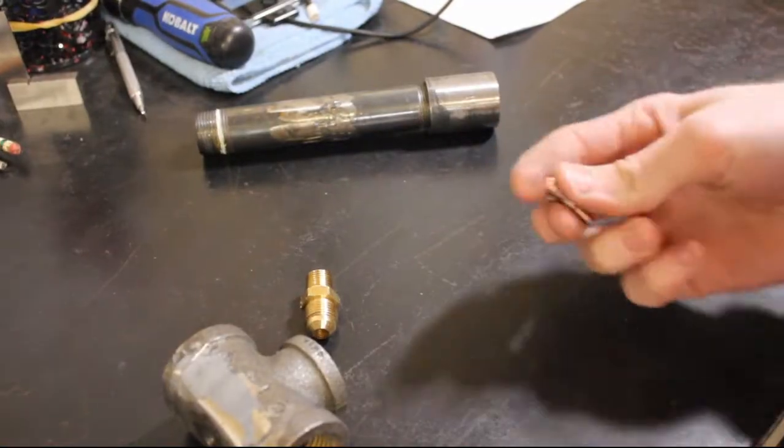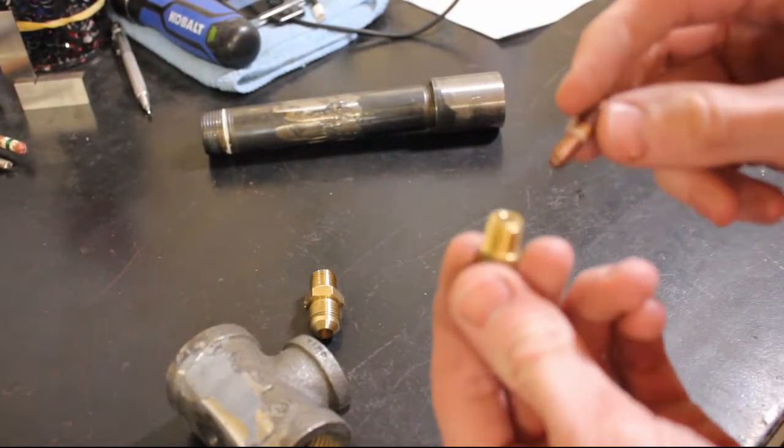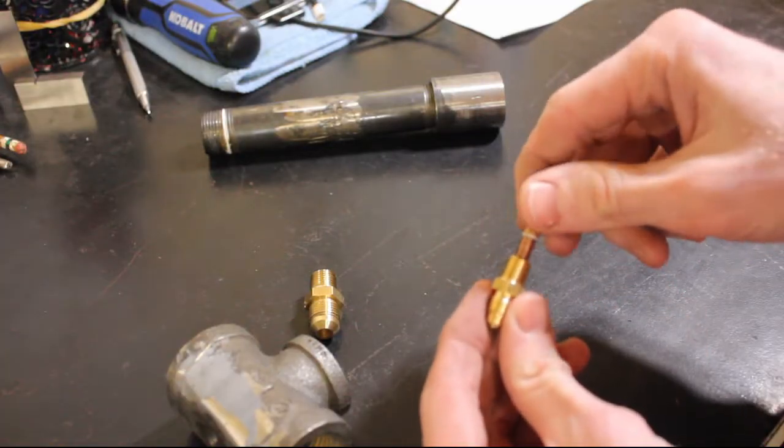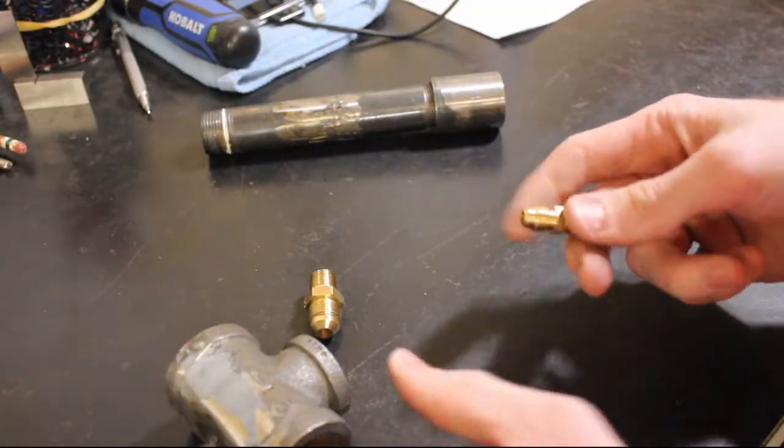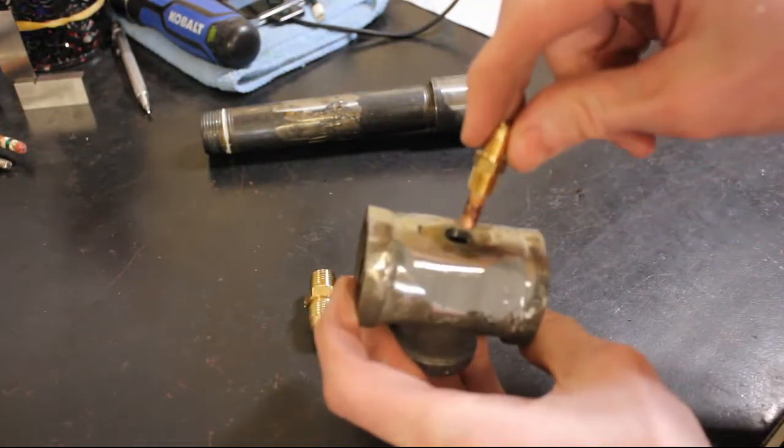After you get that fitting tapped, you're ready to assemble. This step is pretty easy. Go ahead and screw your MIG tip into your 1/8 inch MPT to 1/4 inch flare fitting. Then take that fitting and thread it into the top of your tee.